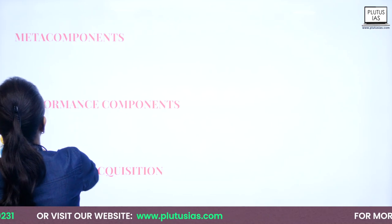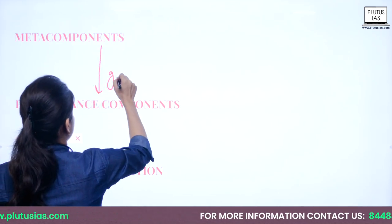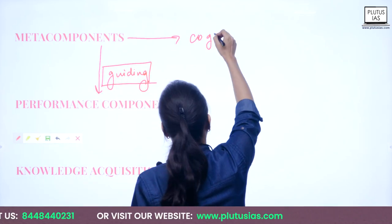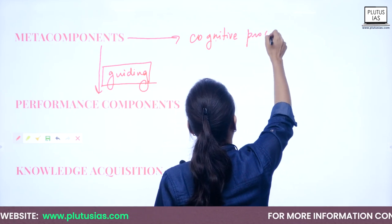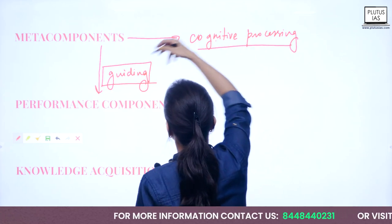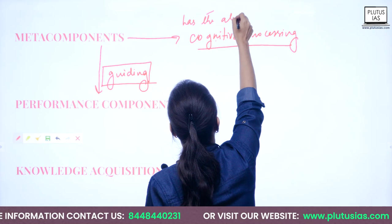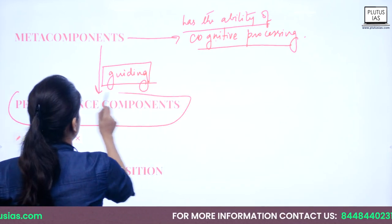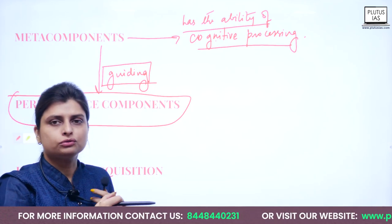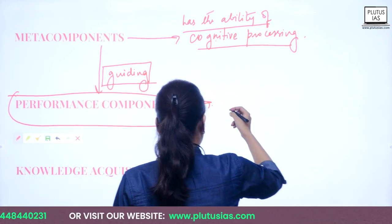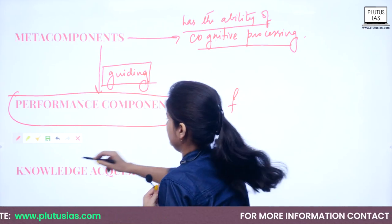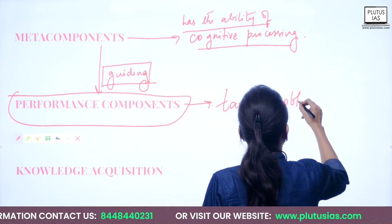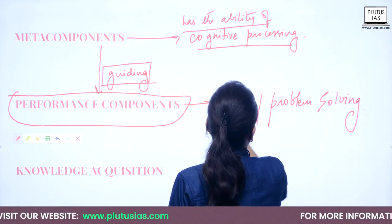The meta-component is basically guiding the performance component. Meta-component has the ability of cognitive processing. The performance component is your performance towards problem solving — essentially, the tasks required for problem solving.